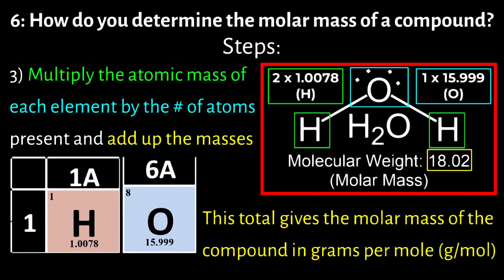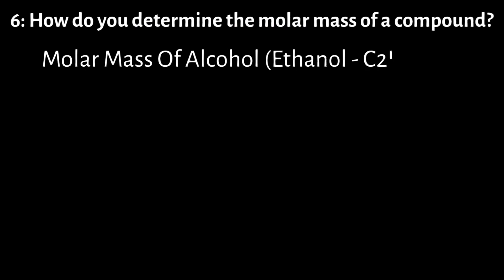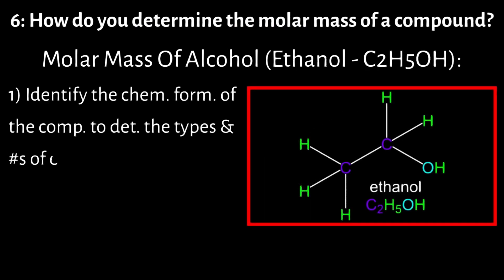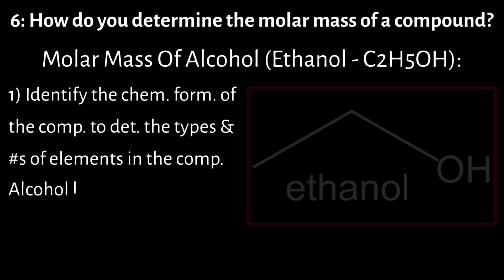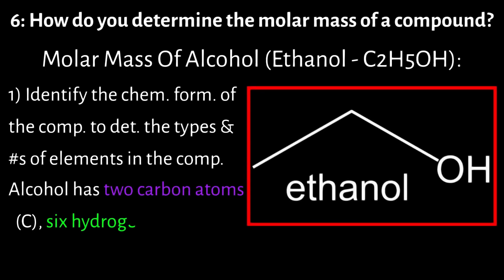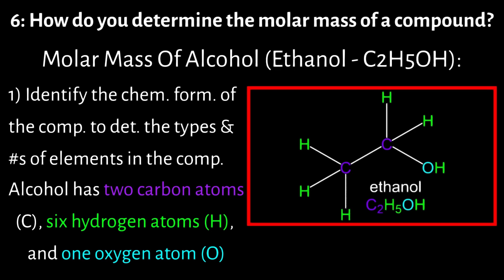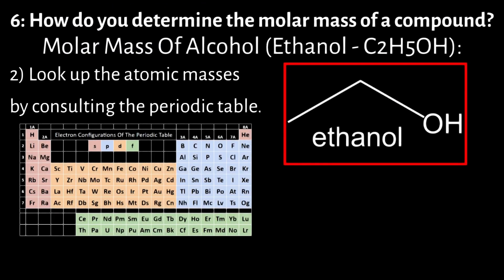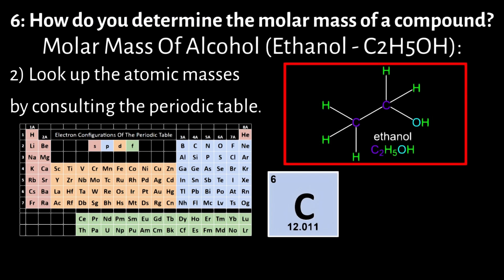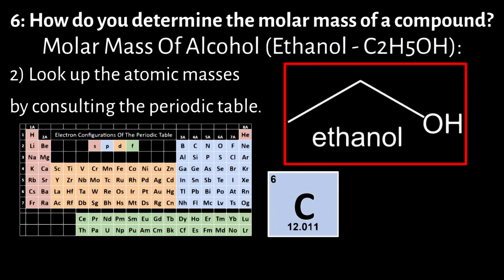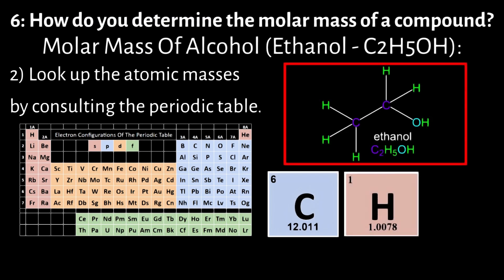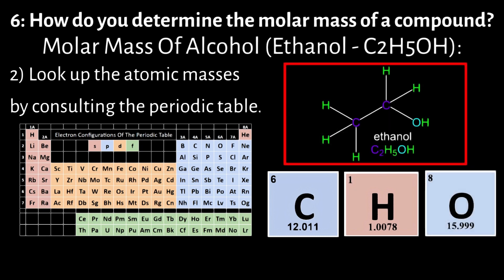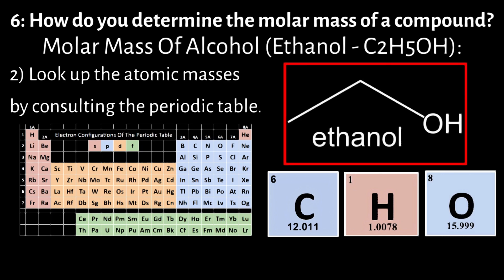For example, let's calculate the molar mass of ethanol, C2H5OH. First, identify the chemical formula: ethanol has two carbon atoms (C), six hydrogen atoms (H), and one oxygen atom (O). Next, look up the atomic masses from the periodic table: carbon (C) has an atomic mass of approximately 12.011 g/mol; hydrogen (H) has an atomic mass of approximately 1.008 g/mol; and oxygen (O) has an atomic mass of approximately 15.999 g/mol.